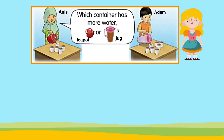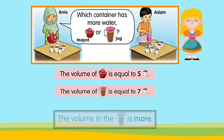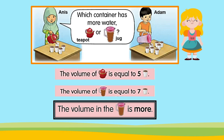Yes, the jug has more water! The volume of the teapot is equal to five glasses of water. The volume of the jug is equal to seven glasses of water. The volume in the jug is more.